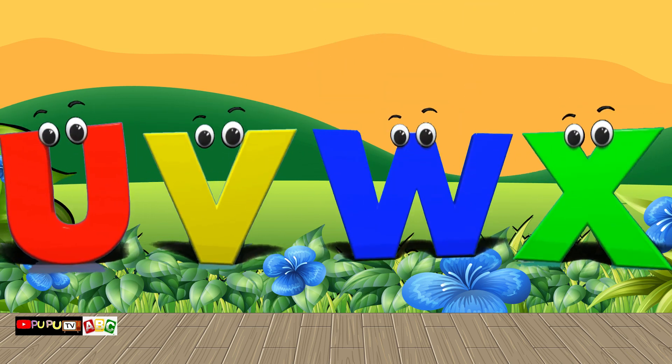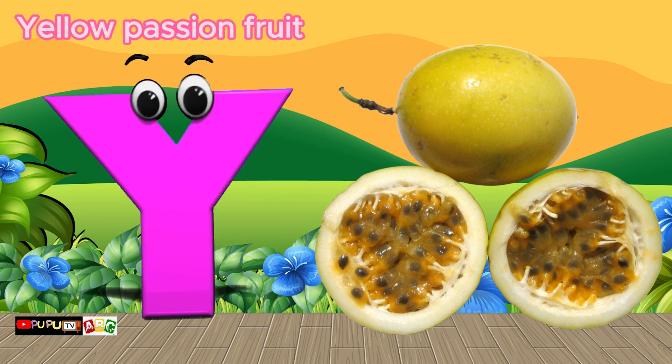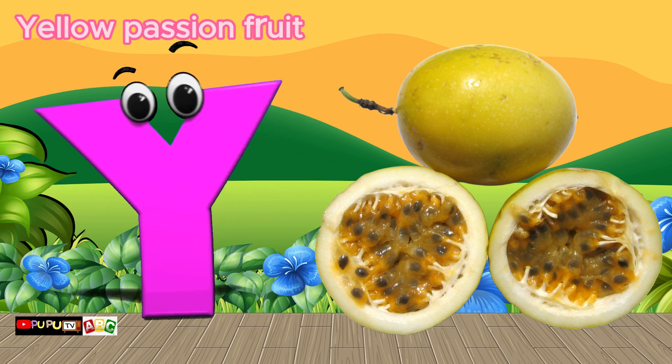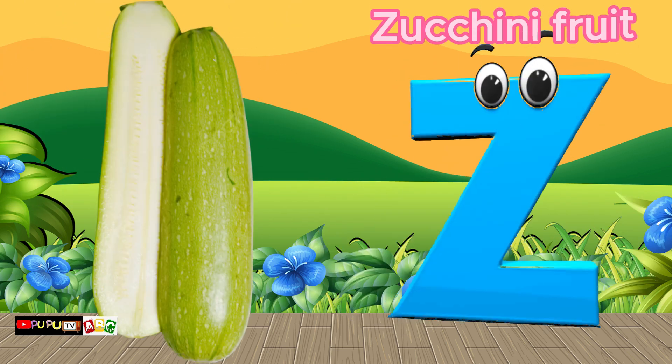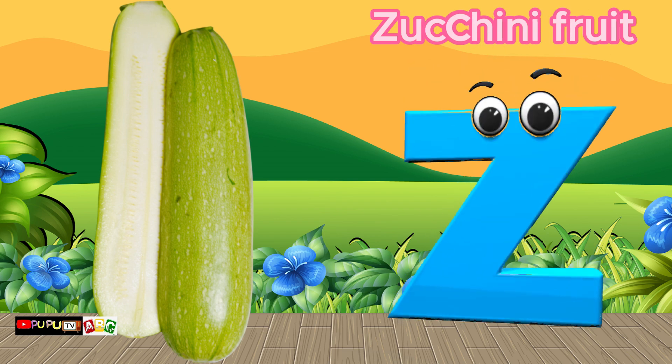Y is for Yellow Passion Fruit, y-y-yellow passion fruit. Z is for Zucchini Fruit, z-z-zucchini fruit.